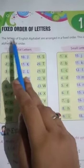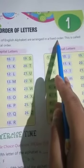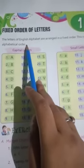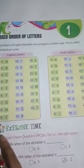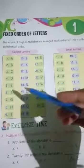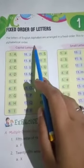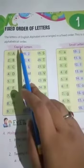The letters of English alphabet are arranged in a fixed order. This is called alphabetical order. Letters are arranged in a fixed order. This is called alphabetical order. What do we say? Alphabetical order.